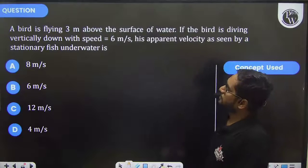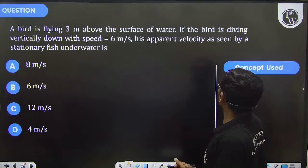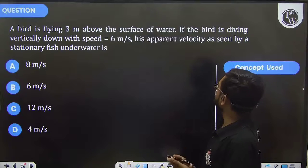Again, a similar type of question: A bird is flying three meters above the surface of water, and the bird is diving vertically down with a speed of 6 meters per second.